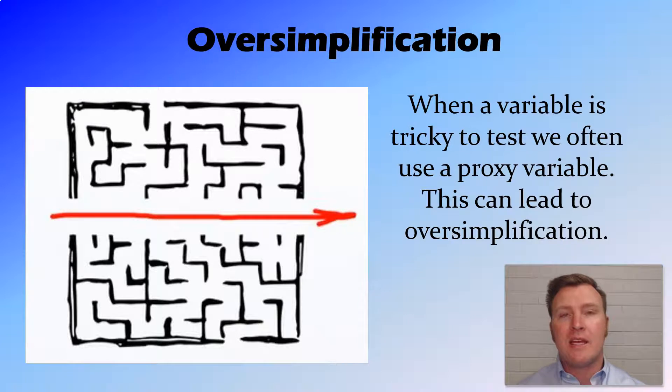So an example here would be if you're trying to test the effect of something on thirst, maybe exercise on thirst. Now, it's hard to test thirst and what that means for different people. So we could use a proxy here of, I give say a Gatorade to each person, and then I record how much they drink. So this is a proxy variable, I'm looking at volume of Gatorade instead of thirst.